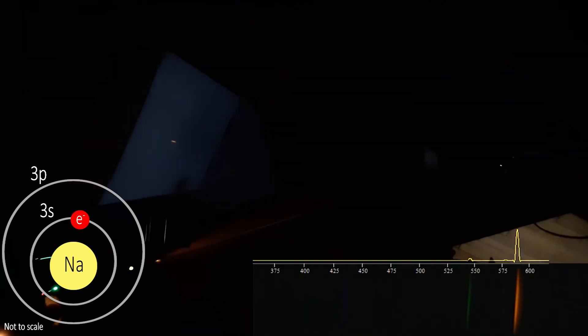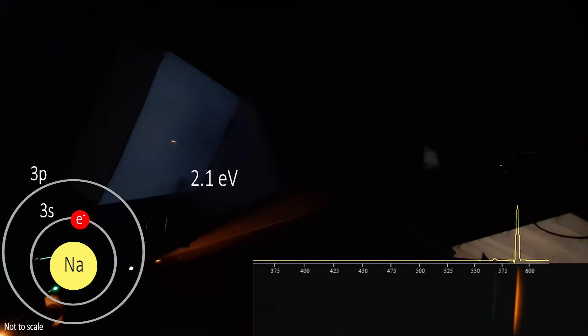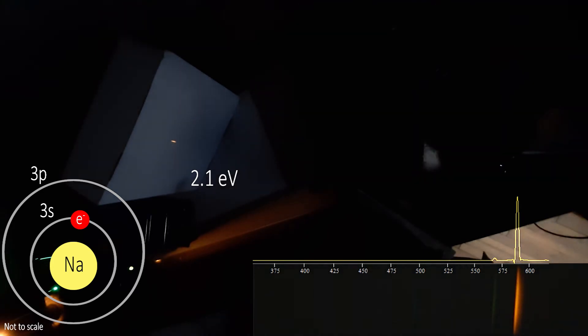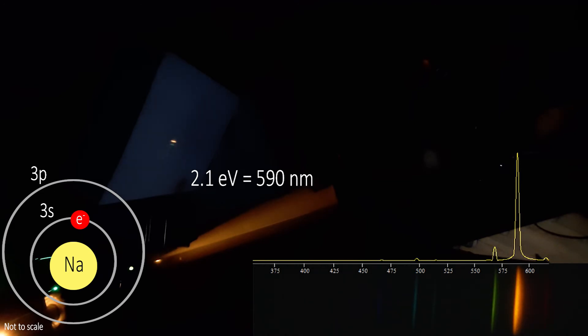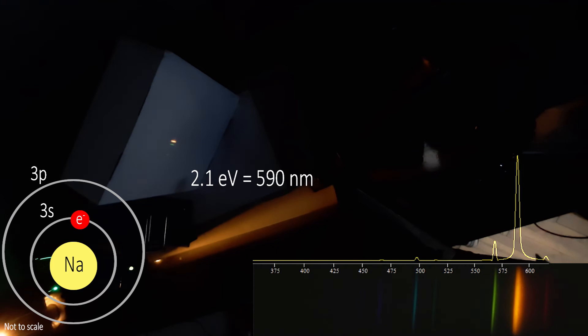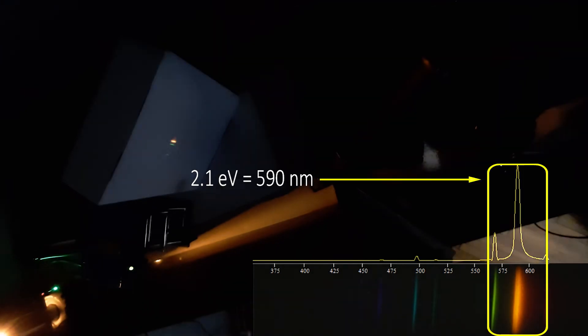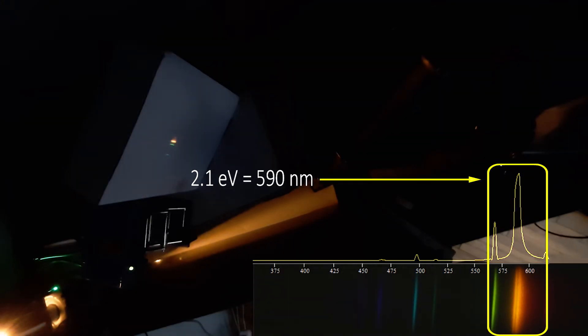This transition costs about two electron volt of energy in both ways. On return wave from excited state, this amount of energy releases in form of light. And two electron volt of energy corresponds roughly to 590 nm wavelengths. We can witness this band on the spectrum as a sharp peak and bright yellow spot below.